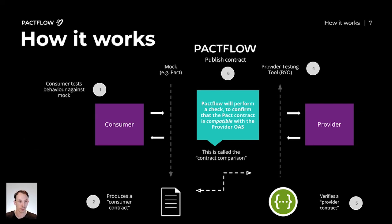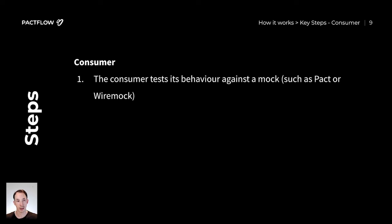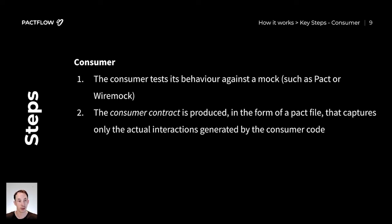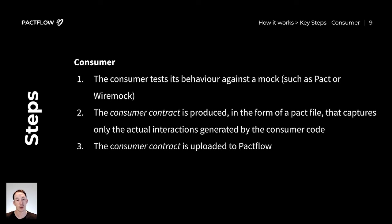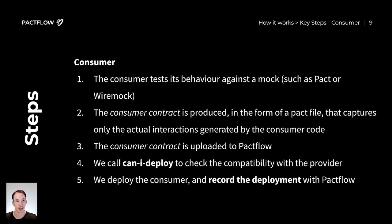So let's recap the steps. On the consumer side: step one, write tests against the mock to verify its behavior — you can use Pact, which will generate a pact file, or your own mocking tools such as WireMock. Step two, serialize that contract — the consumer contract must take the form of a pact file and must capture only the interactions that the consumer code actually uses. Step three, upload that contract to PactFlow. Step four, before deploying, use the can-I-deploy tool — it will check the compatibility of a particular version of a consumer with the version of the provider it's trying to link to. For example, deploying to production will ensure your consumer contract is compatible with the provider currently in production. If that passes, deploy the consumer and record the deployment with PactFlow.